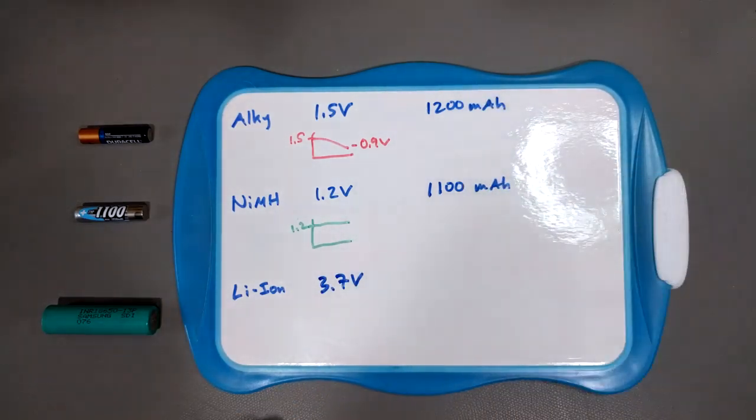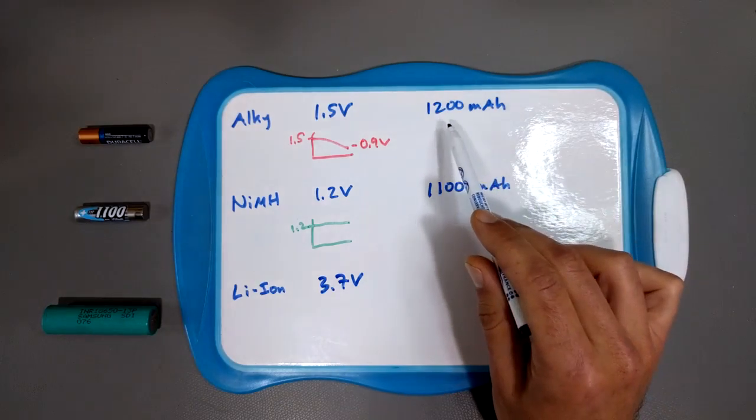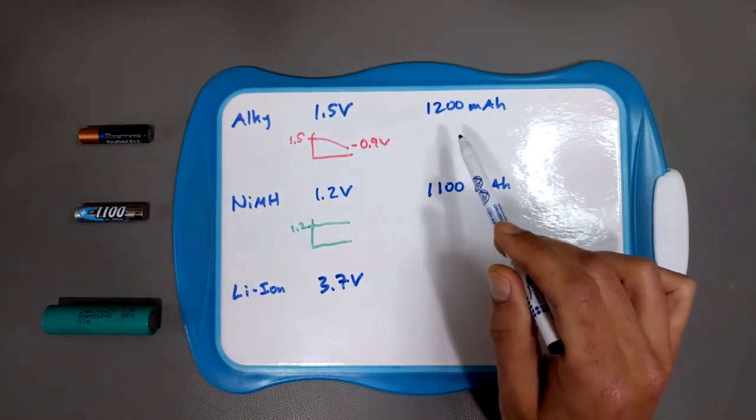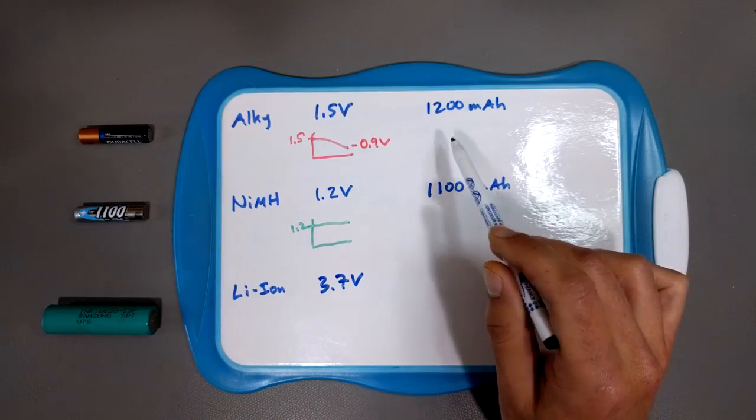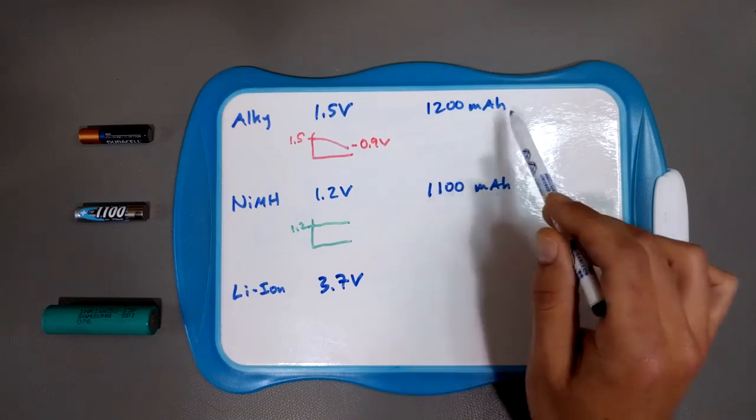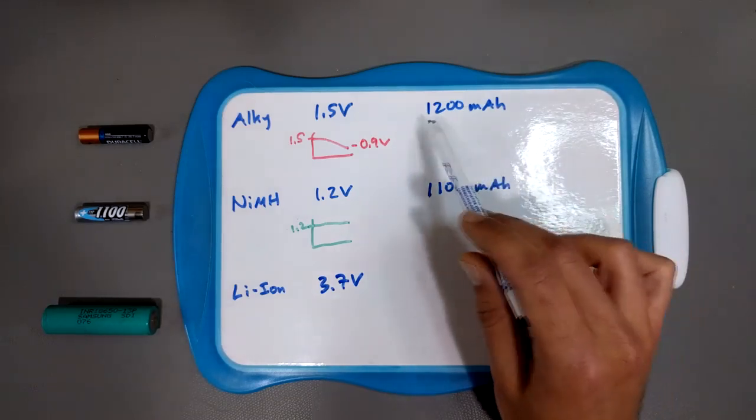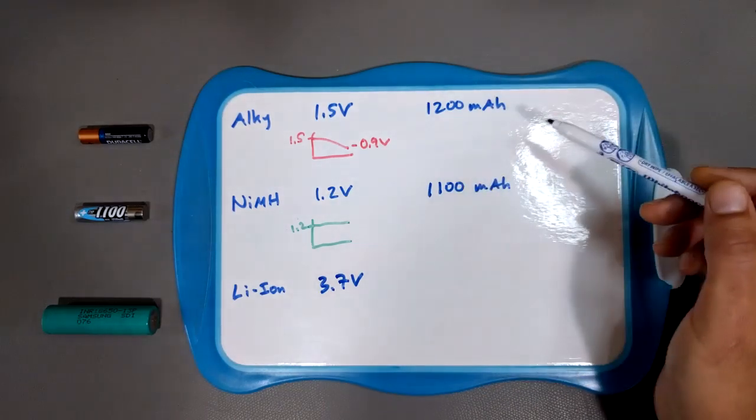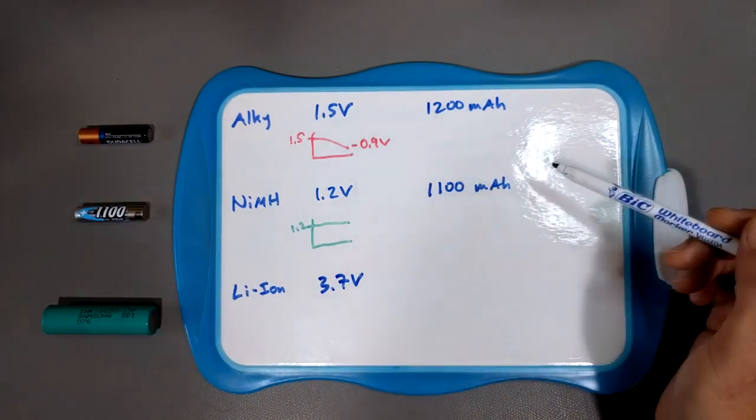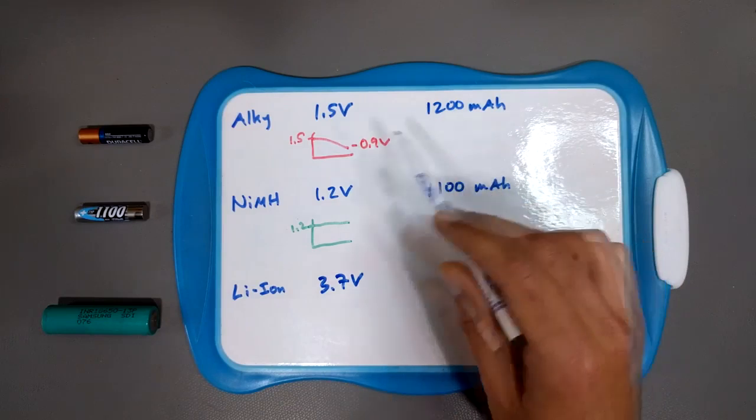So here you think, well, yeah, but it's a higher voltage, so isn't it better? Well, not really, because the alkaline, the voltage is going to drop, which means this dropping number times this number is going to give you less and less power over time, whereas the nickel metal hydride is going to stay relatively constant at 1.2 volts. It's not going to drop off.